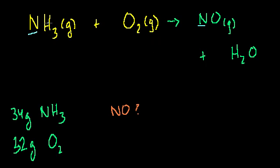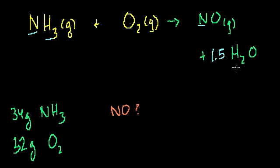We have three hydrogens on the left-hand side and only two on the right-hand side. How can we get three hydrogens on the right-hand side? If we multiply the water by 1.5, we get 1.5 × 2 = 3 hydrogens on the right-hand side. Things are looking good.